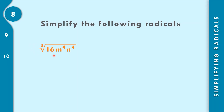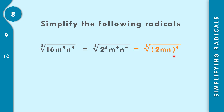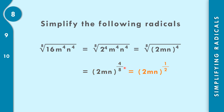For number 8, we have the 8th root of 16 times m to the 4th times n to the 4th. We note that 16 equals 2 times 2 times 2 times 2, so 16 equals 2 to the 4th. Since 2, m, and n all share the exponent 4, we combine them: the 8th root of the quantity (2mn) to the 4th power. Writing 4 over 8 and reducing: 4 divided by 4 is 1, and 8 divided by 4 is 2, giving 1 half. The final answer is the square root of 2mn.